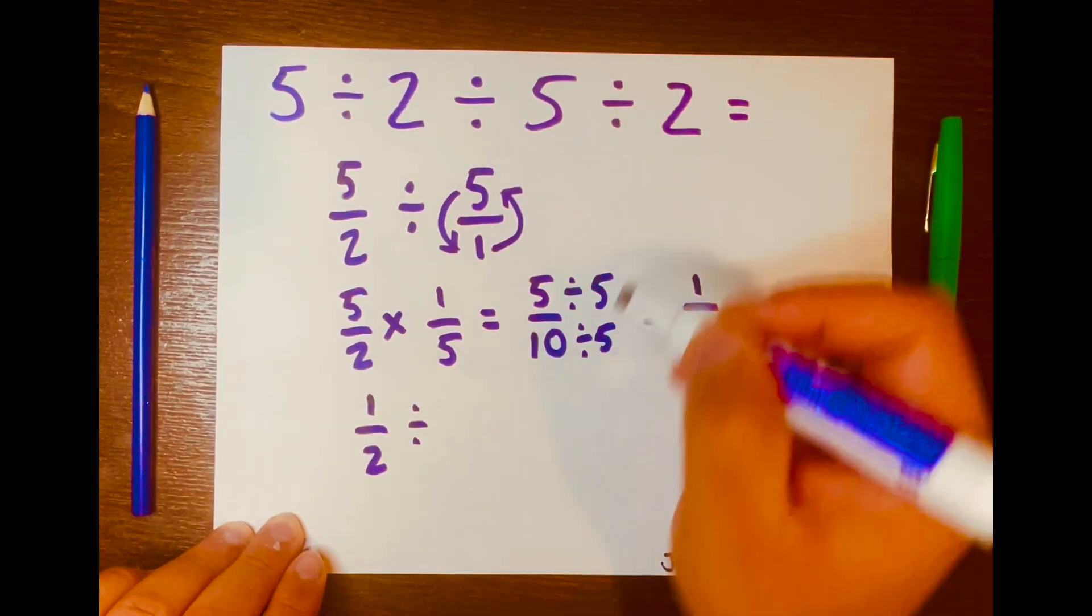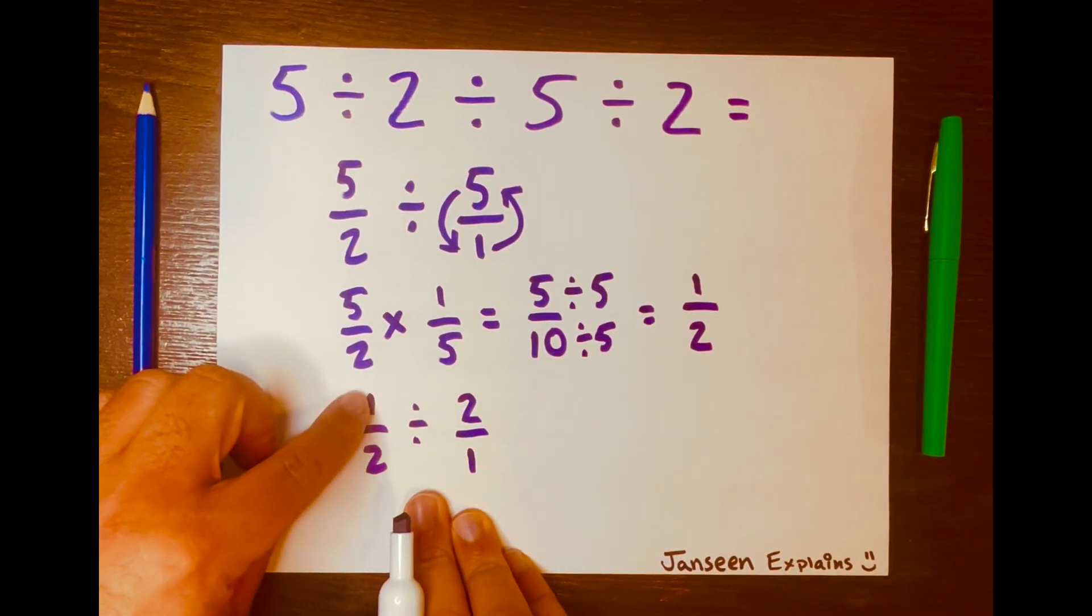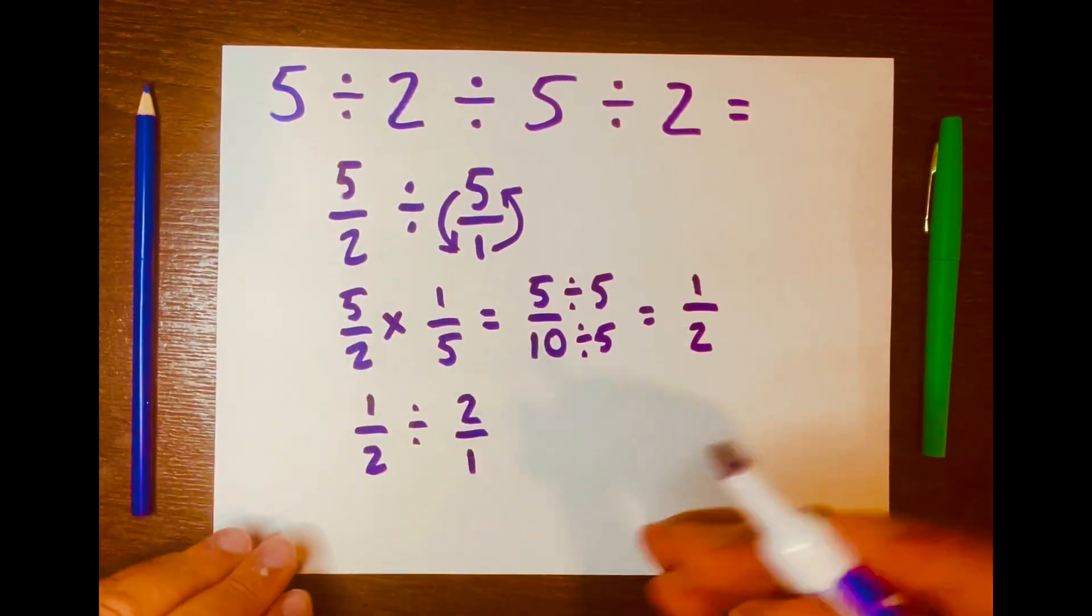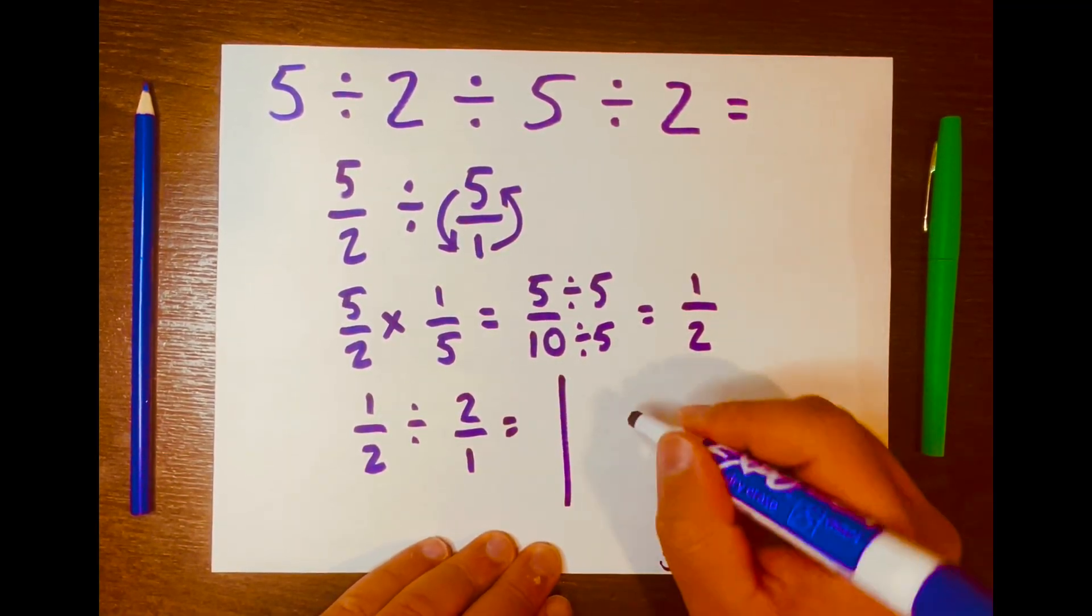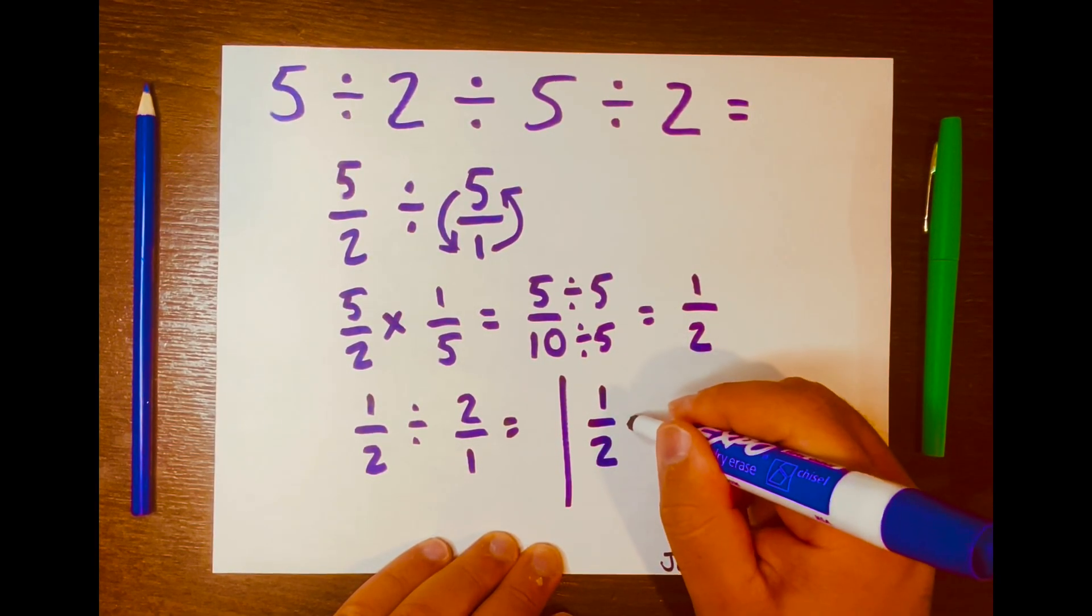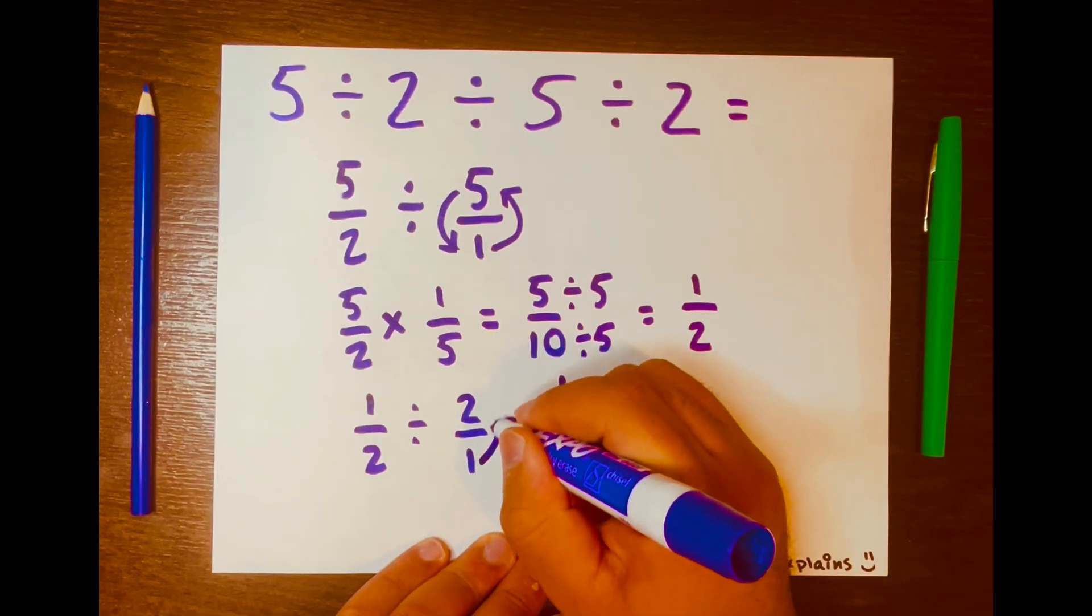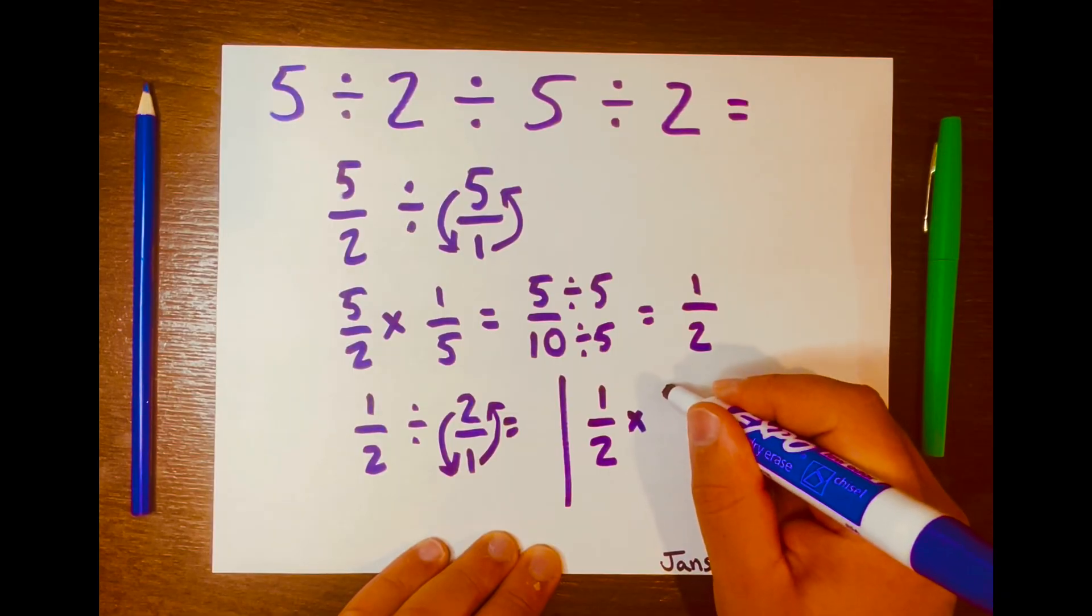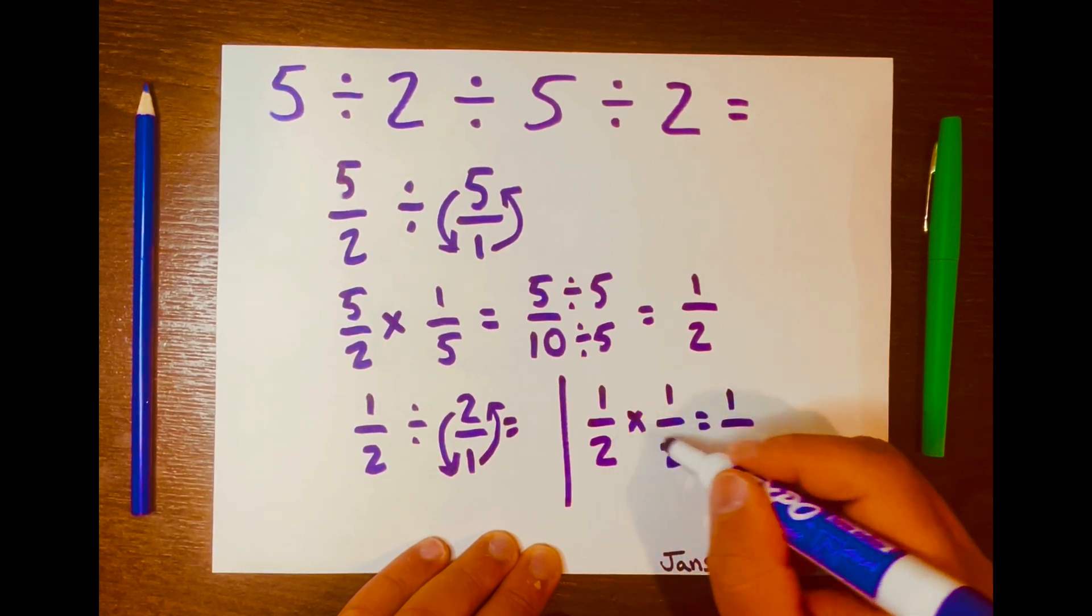Bring that division symbol down, and the 2, and I want to write the 2 as a fraction. So now we have 1 over 2 divided by 2 over 1. We can use the keep change flip method again. Because I ran out of space, let me just write it over here. We have 1 over 2, and we change the division symbol to multiplication. Then we flip this fraction, so the 1 will go on top and the 2 will go at the bottom. It will be written like this: 1 over 2, and then you just multiply across. So 1 times 1 is 1, and 2 times 2 is 4.